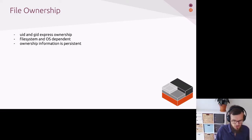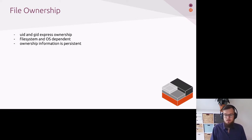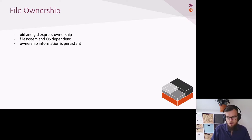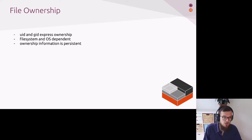One thing to note is that this ownership information is persistent — this is something we'll be touching on later. What I mean by this is that if I turn off my computer and restart it, or unplug an external disk and plug it back in, the ownership information will still be the same, all else being equal. There are a few things you can do to alter this, but overall the ownership information can't be easily altered. The association between UIDs and names might have changed, but the raw UID and GID values are usually the same.